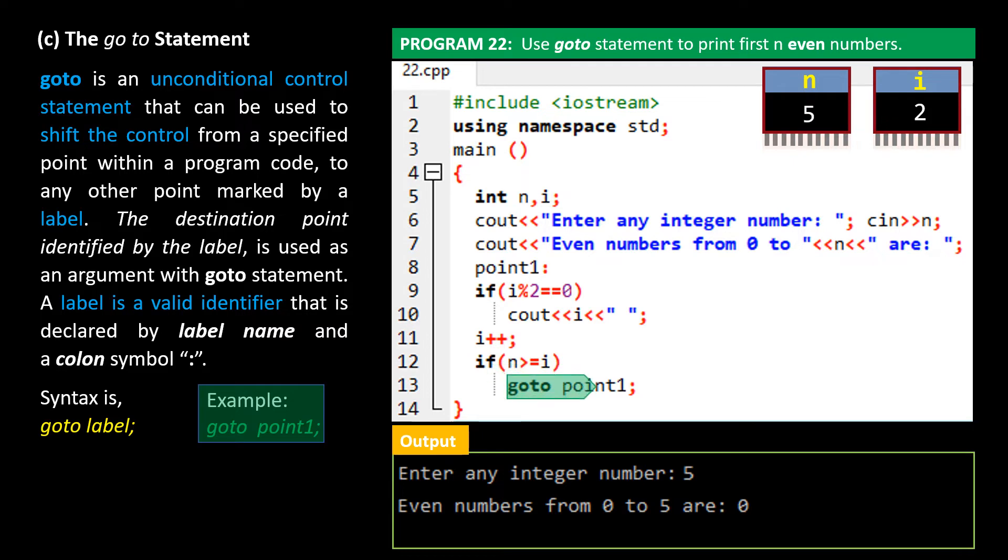Then onto if condition. This time, 2 mode 2 is 0. cout is executed and 2 is printed on screen. Then 2 is plus plused. i becomes 3. n is less than i, so goto works. Control jumps. 3 mode 2 is 1, not 0. Hence cout doesn't execute. i or 3 is plus plused. i becomes 4. n, or 5, is greater than i. Once again goto works. Control jumps up.